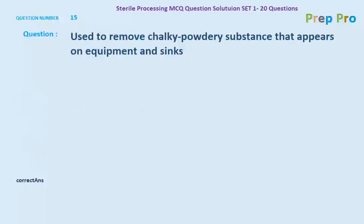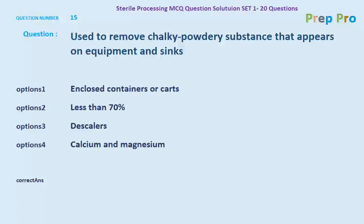Question number fifteen: what is used to remove chalky, powdery substances that appear on equipment and sinks? The options are enclosed containers or cuts, less than 70%, descalers, and calcium and magnesium. The correct answer is descalers — descalers are used to remove chalky, powdery substances that appear on equipment and sinks.